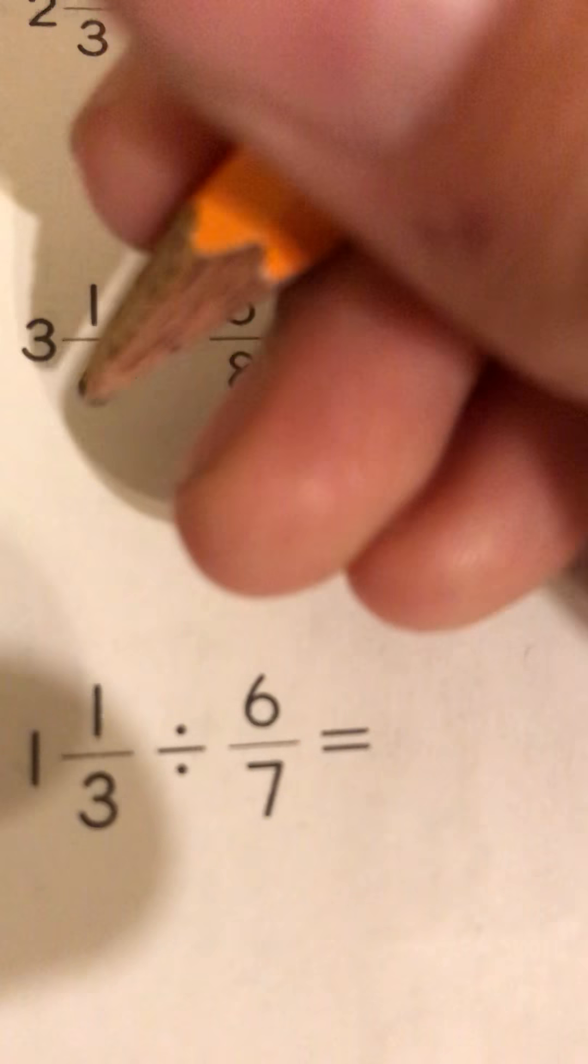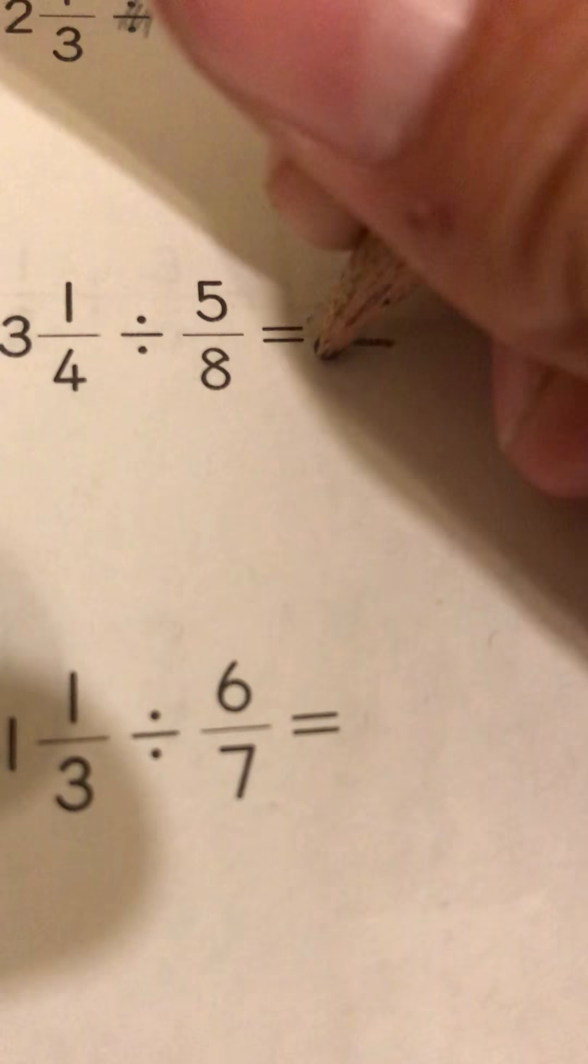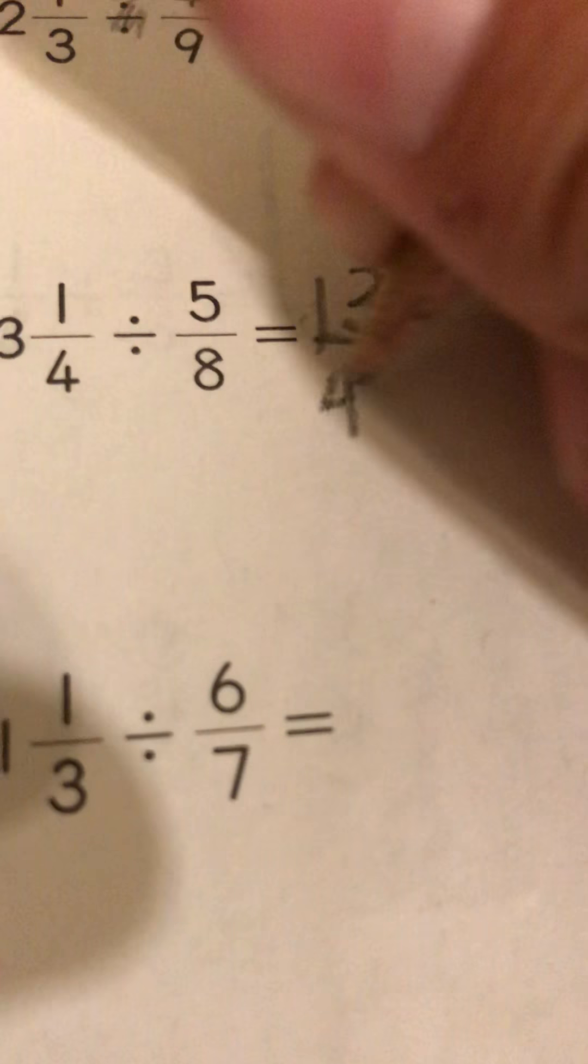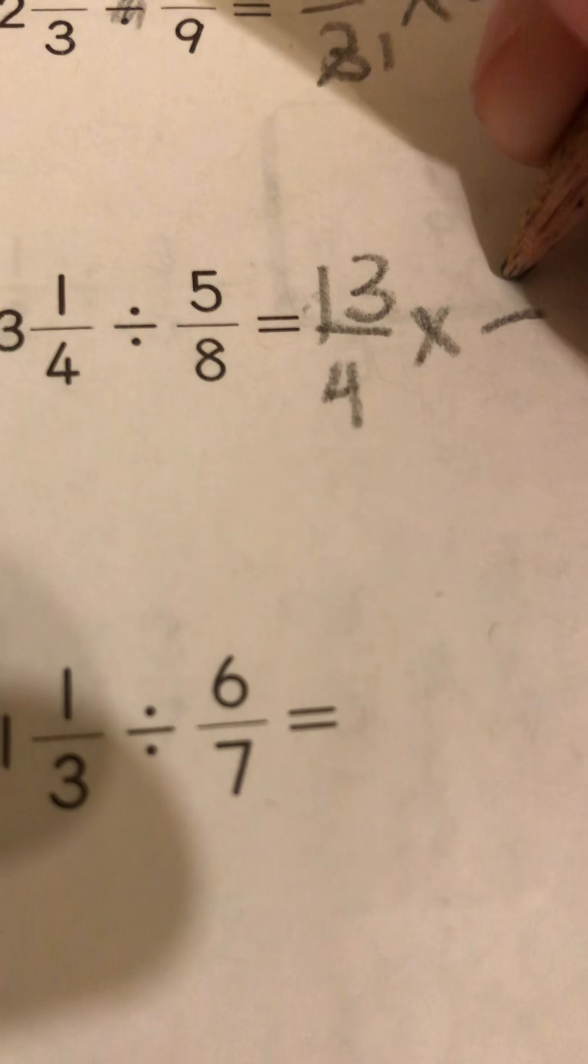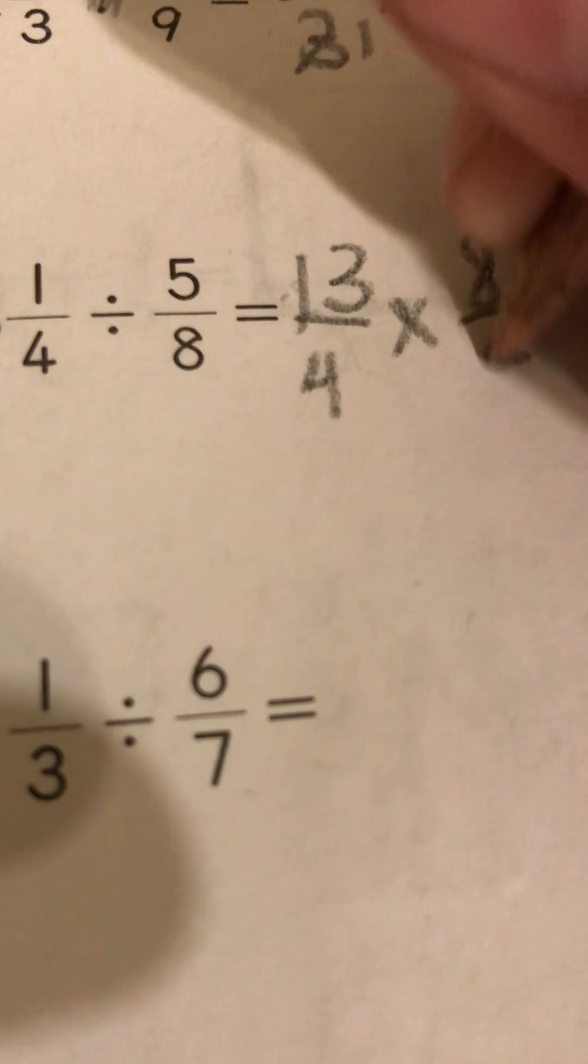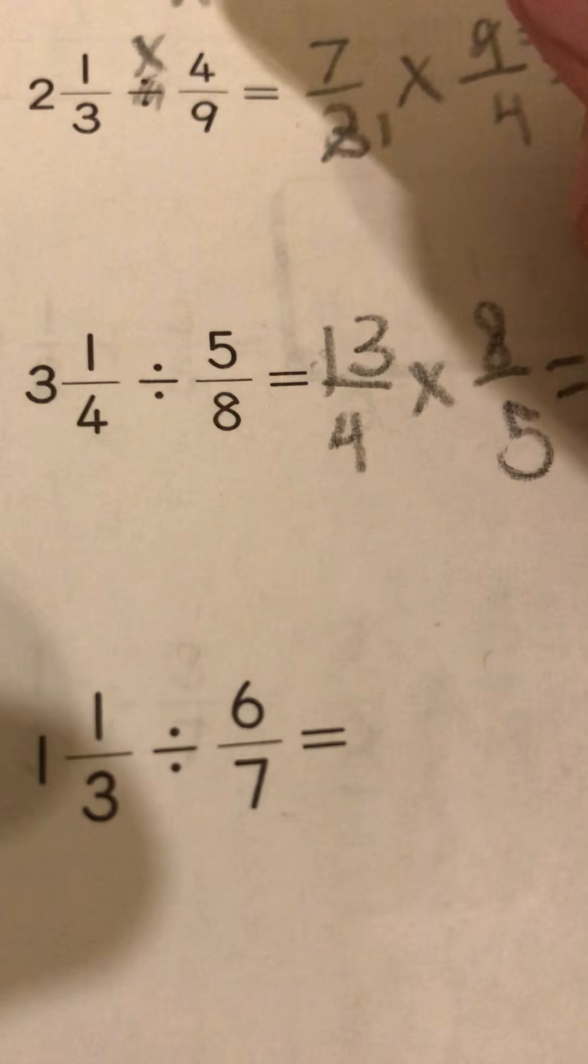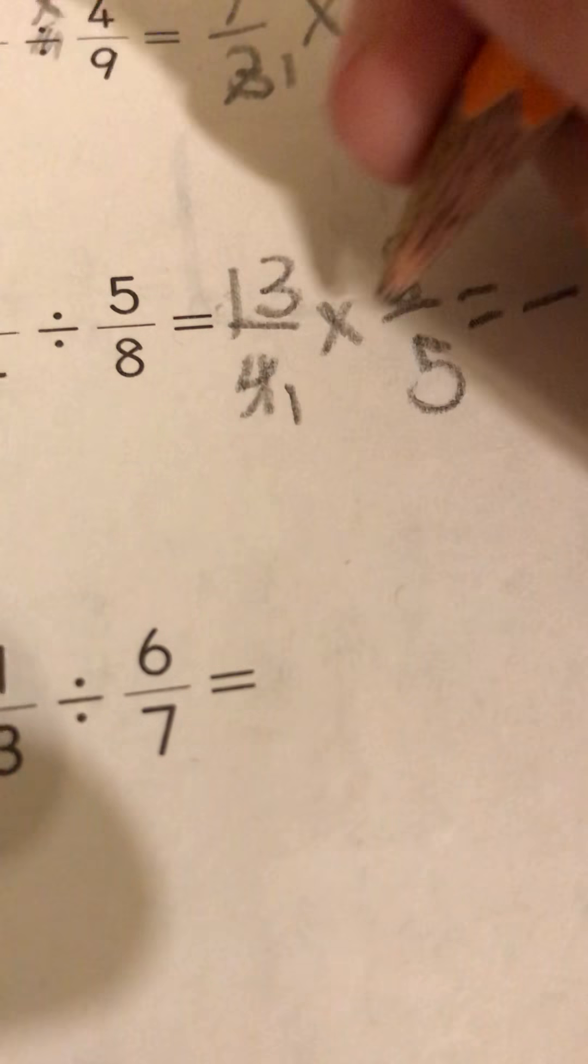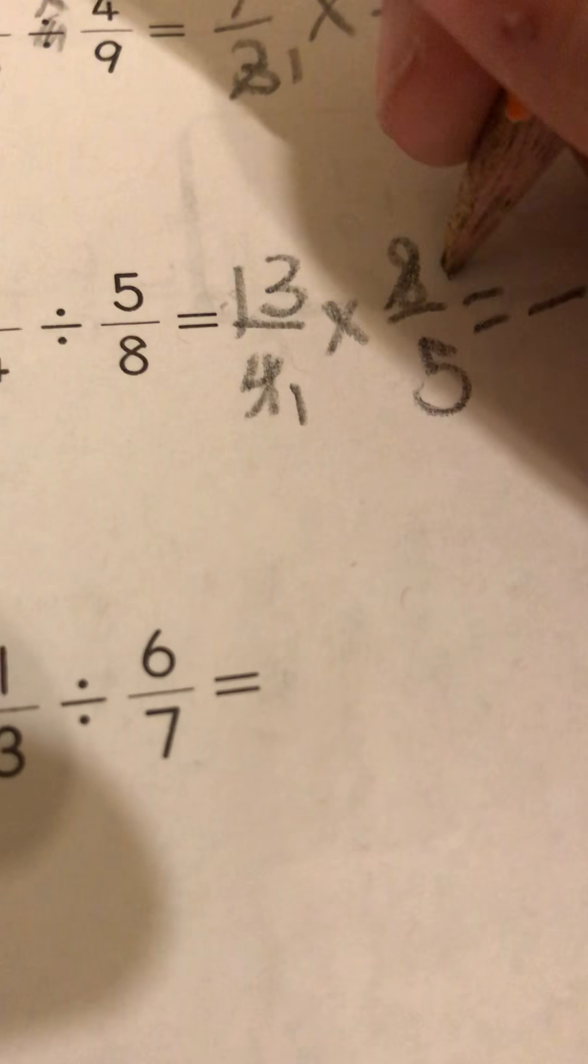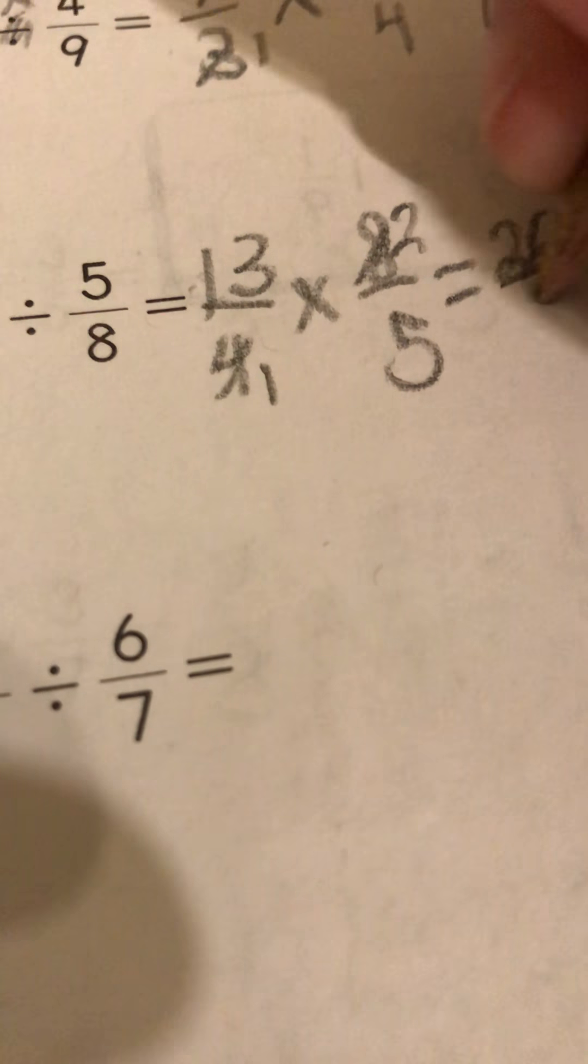So four times three equals twelve, plus one equals thirteen. So thirteen over four times eight over five. Four divides into itself once, eight divides into itself two times, so you have 26 over five.